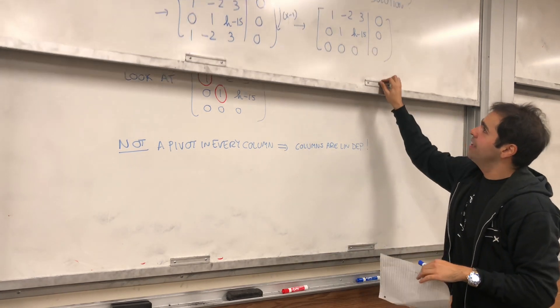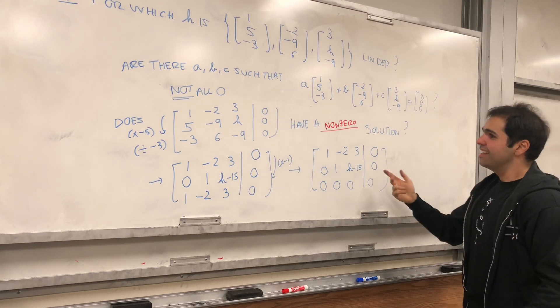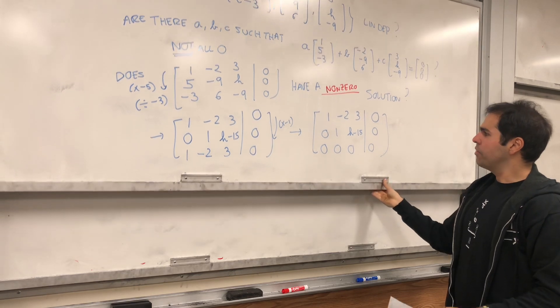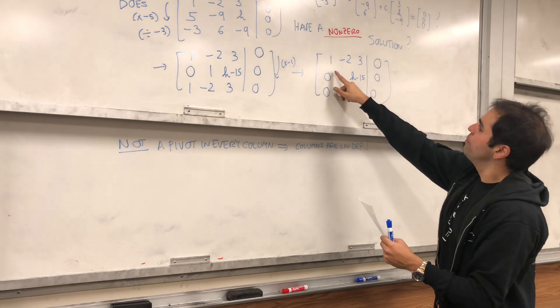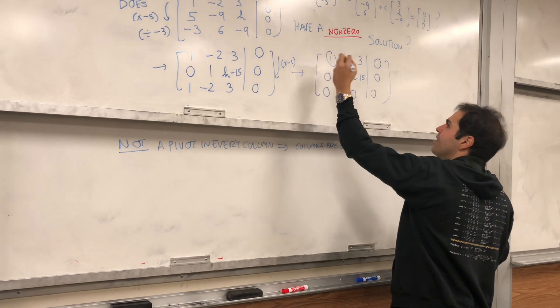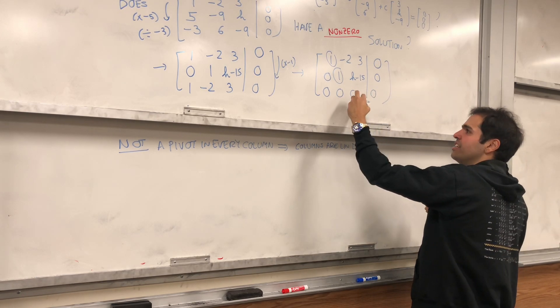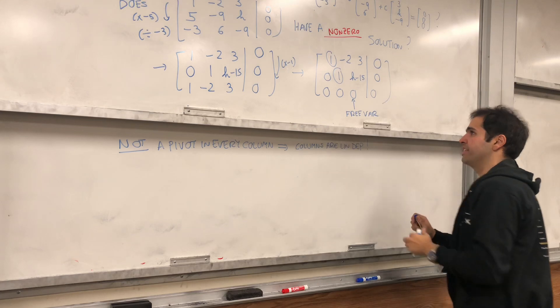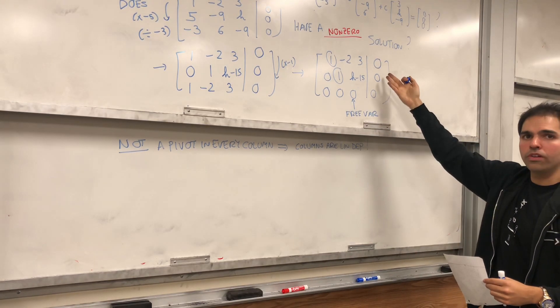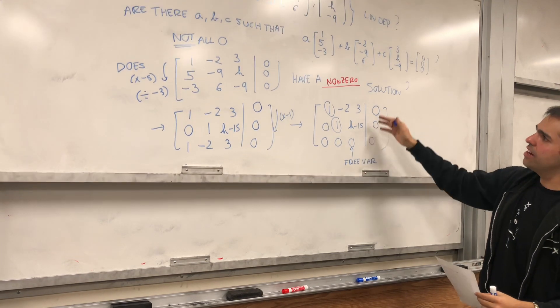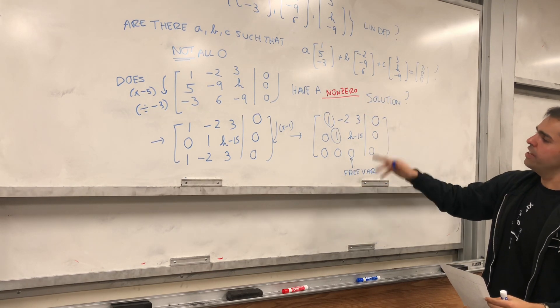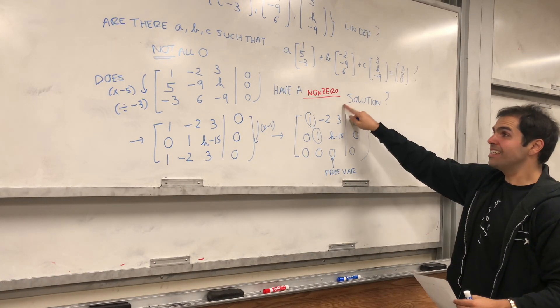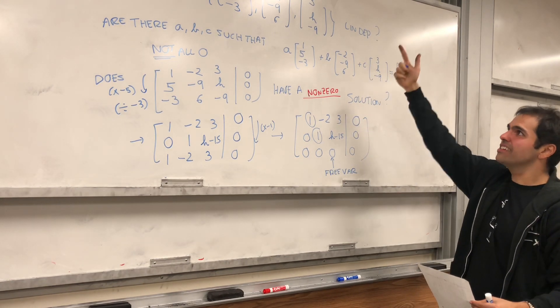Look at this matrix again. We don't need to figure out what the solution is. We just need to know if it has a non-zero solution. In particular, because the pivots are here, interestingly, no matter what the value of h is, this third column will always be a free variable column. Because this system will have a free variable, it automatically means it has infinitely many solutions. Because it has at least one solution, the zero vector, so it either has one solution or infinitely many, but because there are free variables, it must have infinitely many solutions. In particular, it must have a non-zero solution.